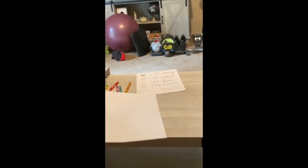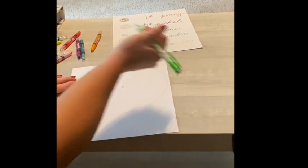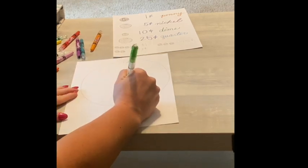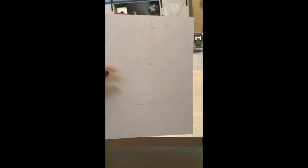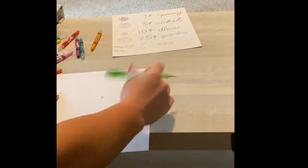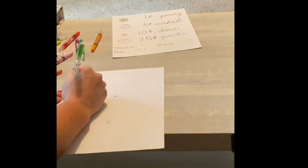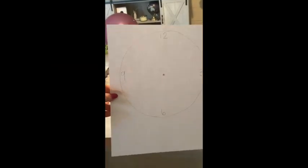Okay. Now, at the top, you're going to put the number 12. And at the bottom, you're going to put the number 6. You need to pause it here. Go ahead and do that. Okay. To the right, you're going to put the number 3. And to the left, you're going to put the number 9. So, your circle should look like this.